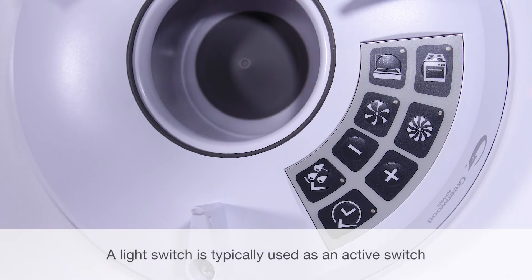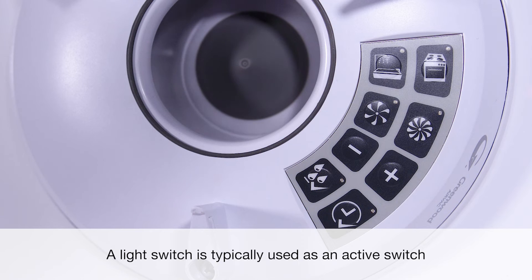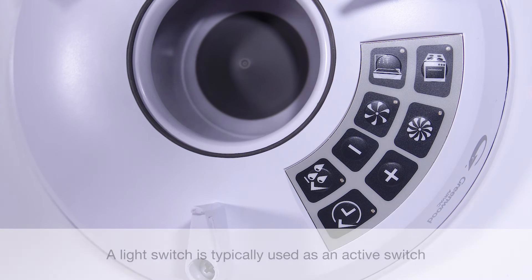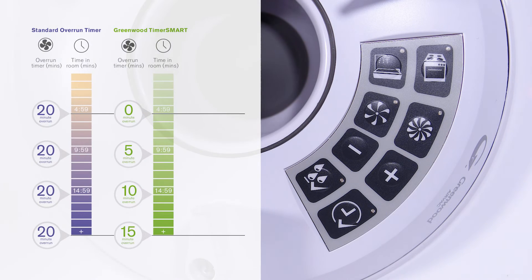The timer smart monitors the length of time the unit has been in boost mode via an active switch. Once the switch is deactivated, the timer smart overrun period should continue to run the unit for a calculated time in boost. The first five minutes should not activate an overrun.